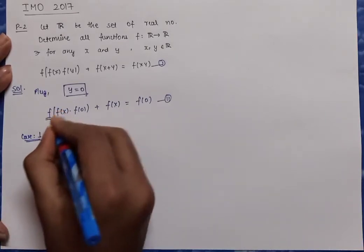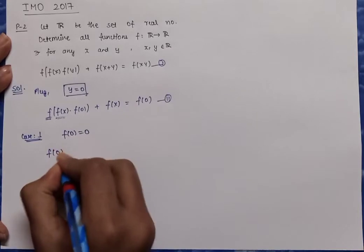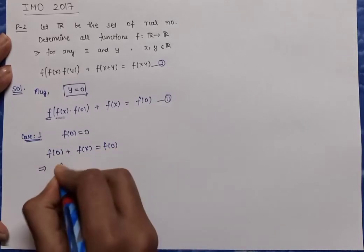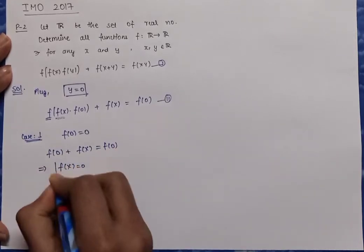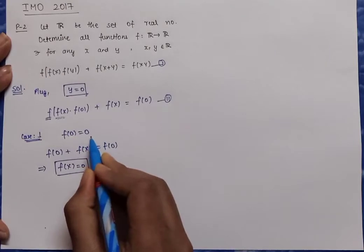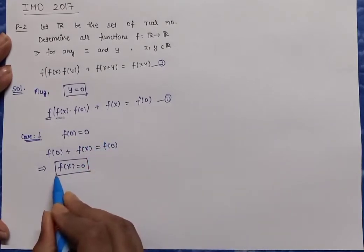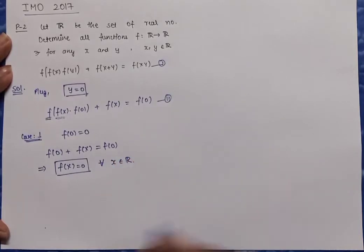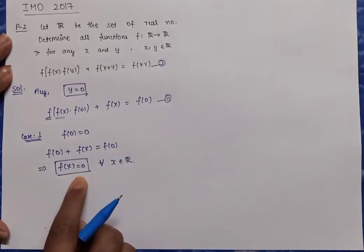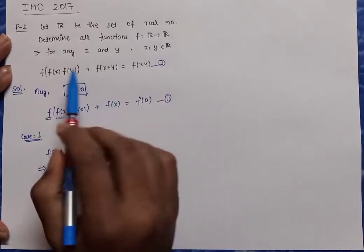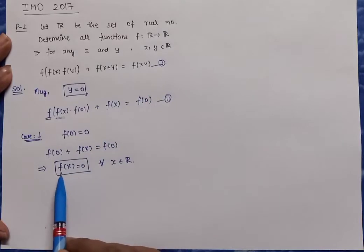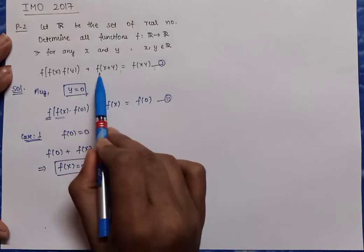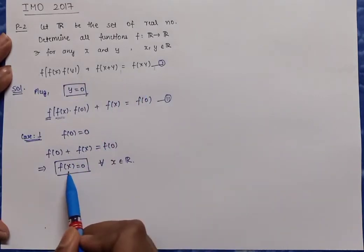In Case 1, with f(0) = 0, equation 2 gives f(0) + f(x) = f(0), so f(x) = 0 for all x in R. This is a constant zero function. We can verify it in the original equation: substituting f(x) = 0 gives 0 + 0 = 0, which holds. So f(x) = 0 for all x is one solution.